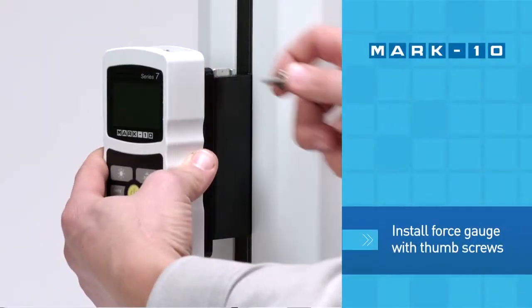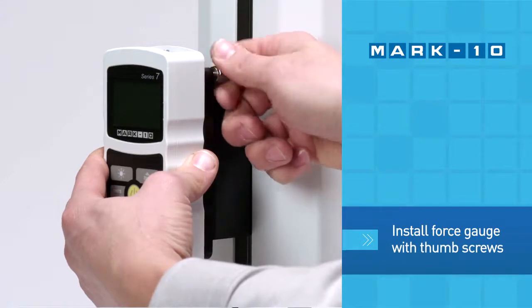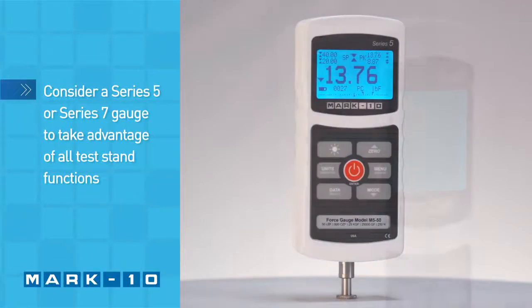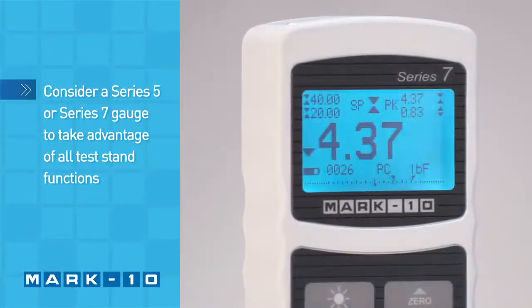Installing a force gauge is simple and it can be easily removed for service and calibration. Consider a series 5 or 7 gauge to take advantage of all test stand functions.